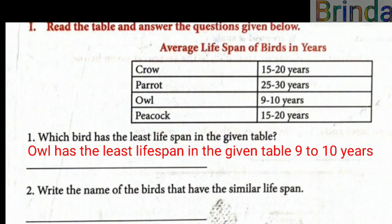Always write in full sentence. The answer is: Owl has the least lifespan of 9 to 10 years. Always write full sentences.